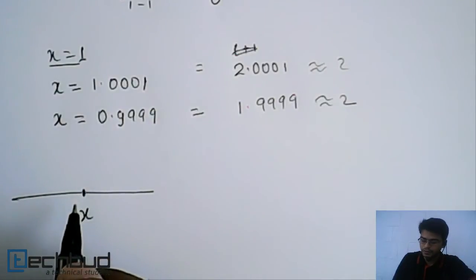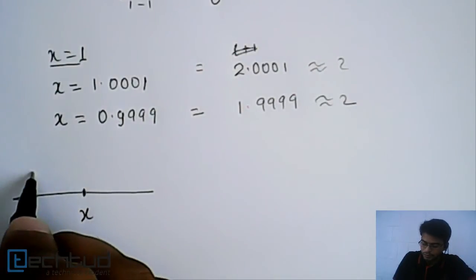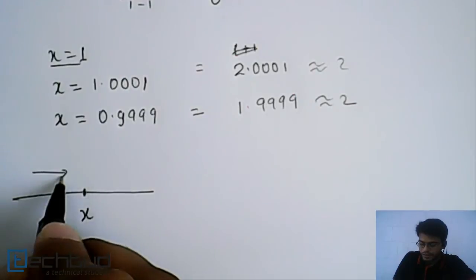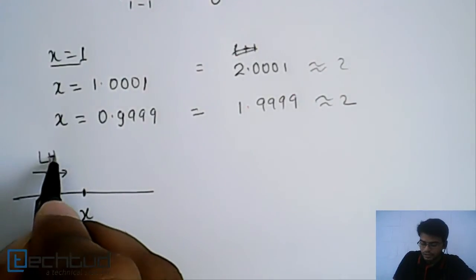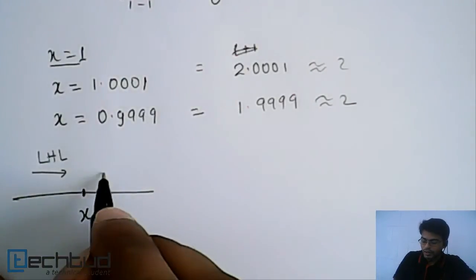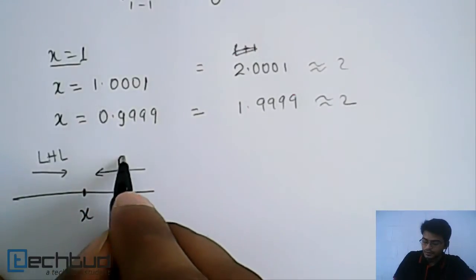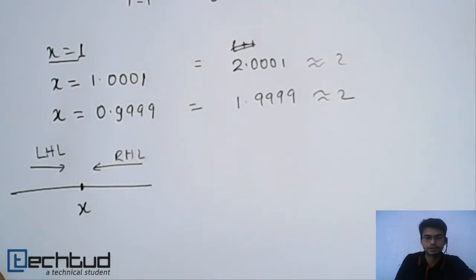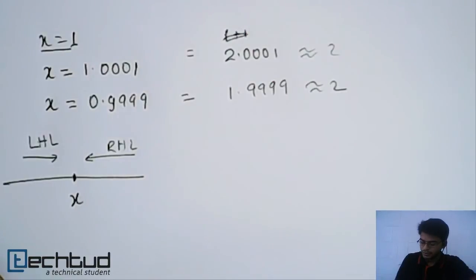So we have two kind of this approach. First is we go from left hand side which is LHL, left hand limit. And this is right hand limit. We approach this in two manners.